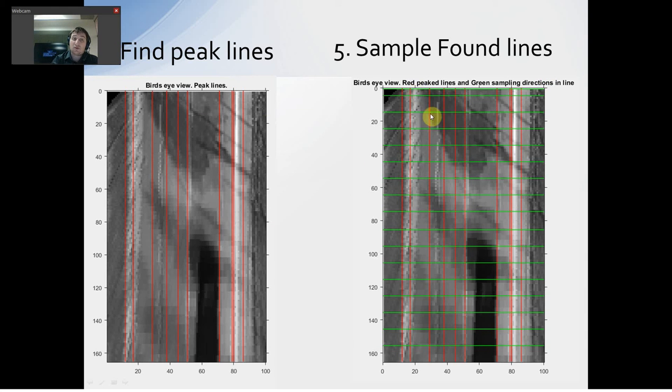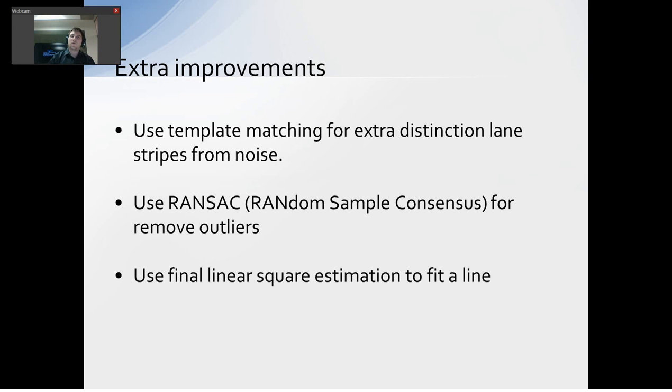Then, in the original paper, doctors said that we can sample via these green lines. We just find an intersection and find these points. It was used for extra improvements. In these points, we use template matching for extra distinction of lane stripes from noise. Also, we use RANSAC to remove outliers in this set of points, and we use final linear least square estimation to fit a line.